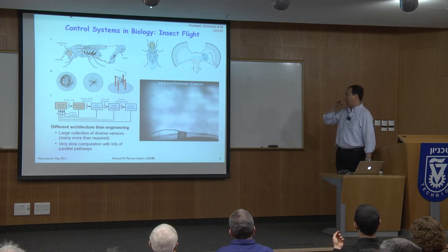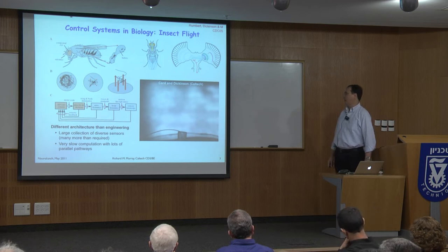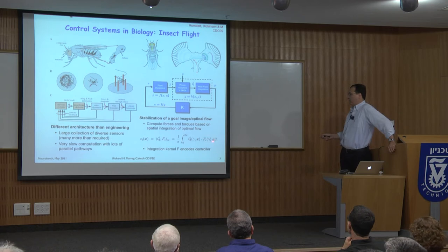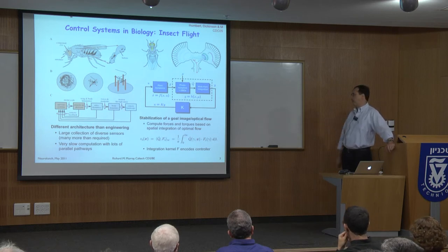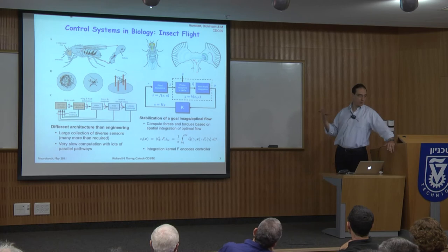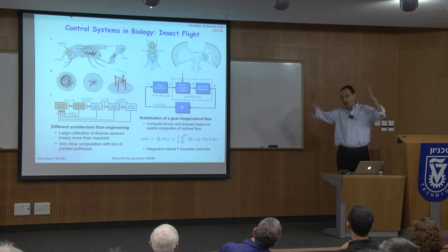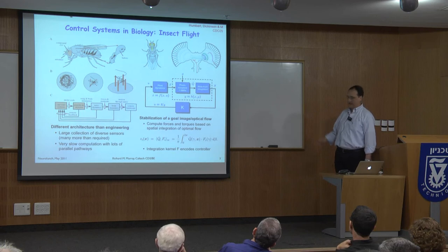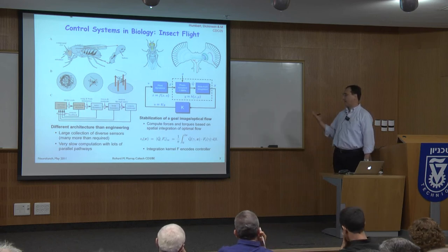In work done with Michael Dickinson — that was Sean Humbert's PhD thesis, now at the University of Maryland — we looked at how to take photoreceptors and first-level processing and integrate that information to get a control signal to modulate motion. One model integrates the optic flow — the time derivative of light intensity flow across individual sensors over a large spatial region — representing how neurons can combine information across many sensors. That gives us different ways of estimating the insect's motion by integrating across its visual field in a clever way.